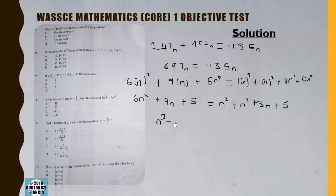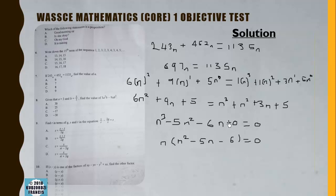Simplifying: n² - 6n² = -5n², 3n - 9n = -6n, constant terms cancel. This gives n³ - 5n² - 6n = 0. Factoring out n: n(n² - 5n - 6) = 0, then n(n+1)(n-6) = 0. So n = 0, n = -1, or n = 6. The correct answer is n = 6.